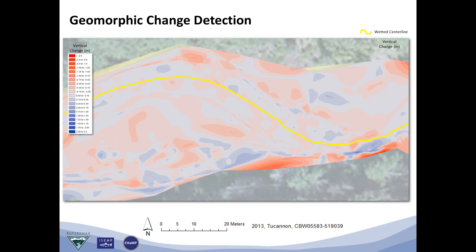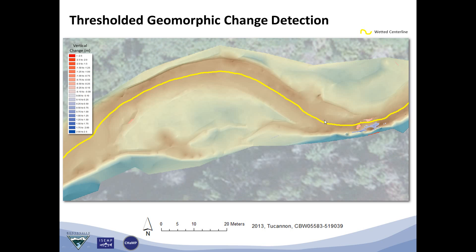The River Bathymetry Toolkit also incorporates a geomorphic change detection analysis. Given two visits in time, we're able to subtract those two visits — simple mathematical subtraction of the elevation surface at those two points in time. Shown in red are areas that decreased in elevation over time, essentially erosion. Shown in blue are depositional areas where the elevation surface went up over time. Since some elevation change is small or in areas of uncertain elevation, we filter out the change map to find only those significant areas we trust. Here you can see some erosion on the inside of a bend and some deposition on the outside of the bend.